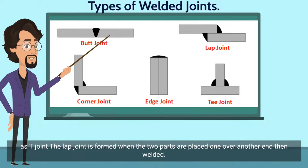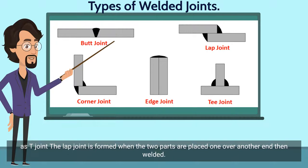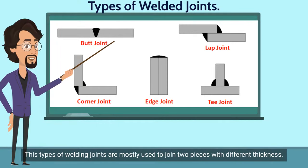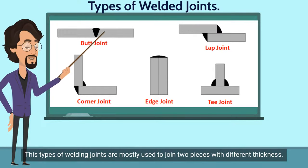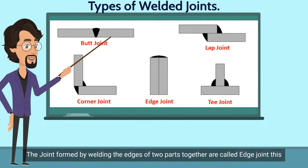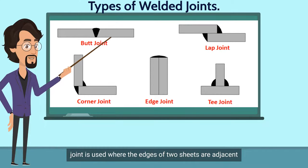The lap joint is formed when two parts are placed one over another and then welded. It may be one-sided or double-sided. This type of welding joint is mostly used to join two pieces with different thicknesses.